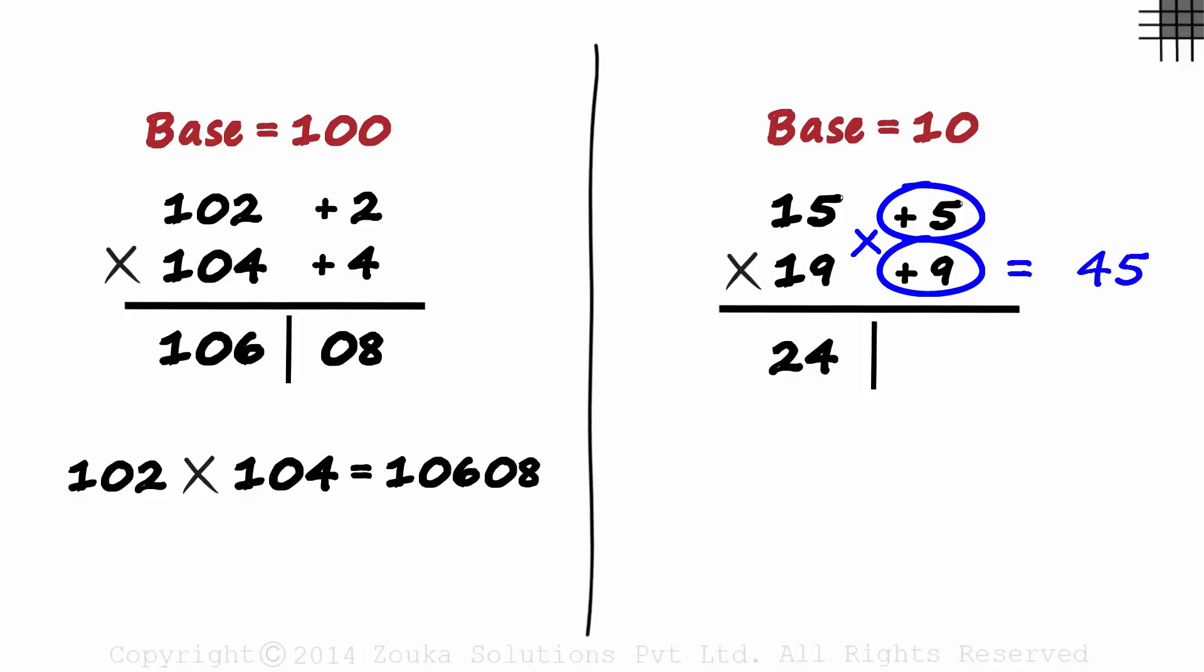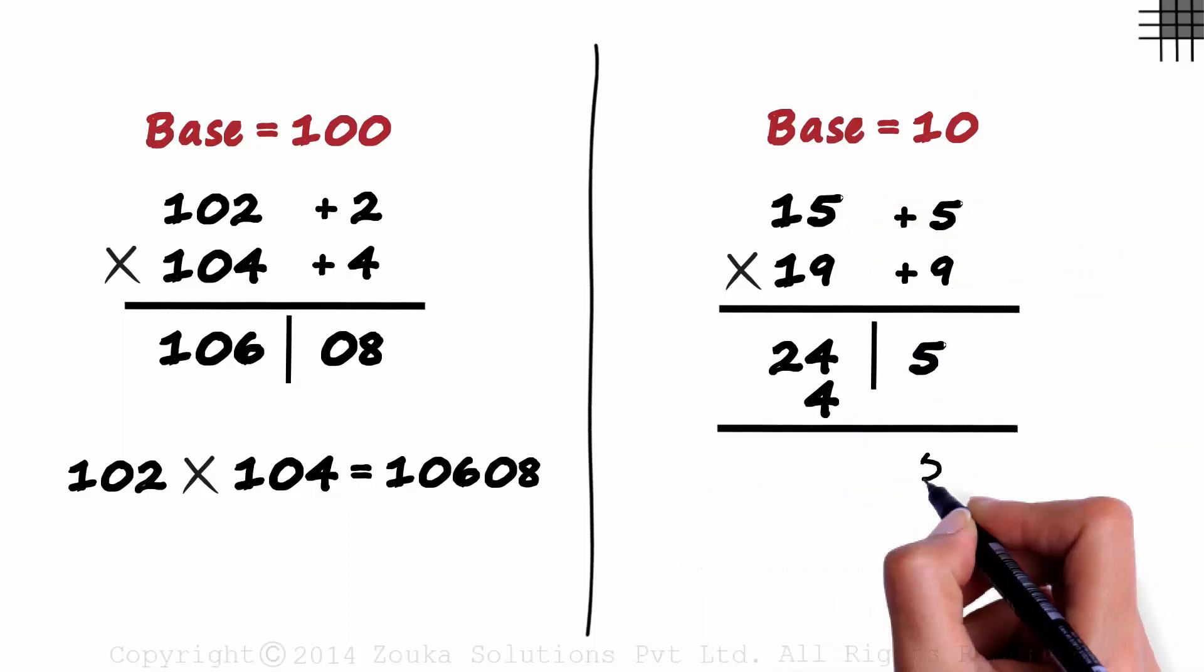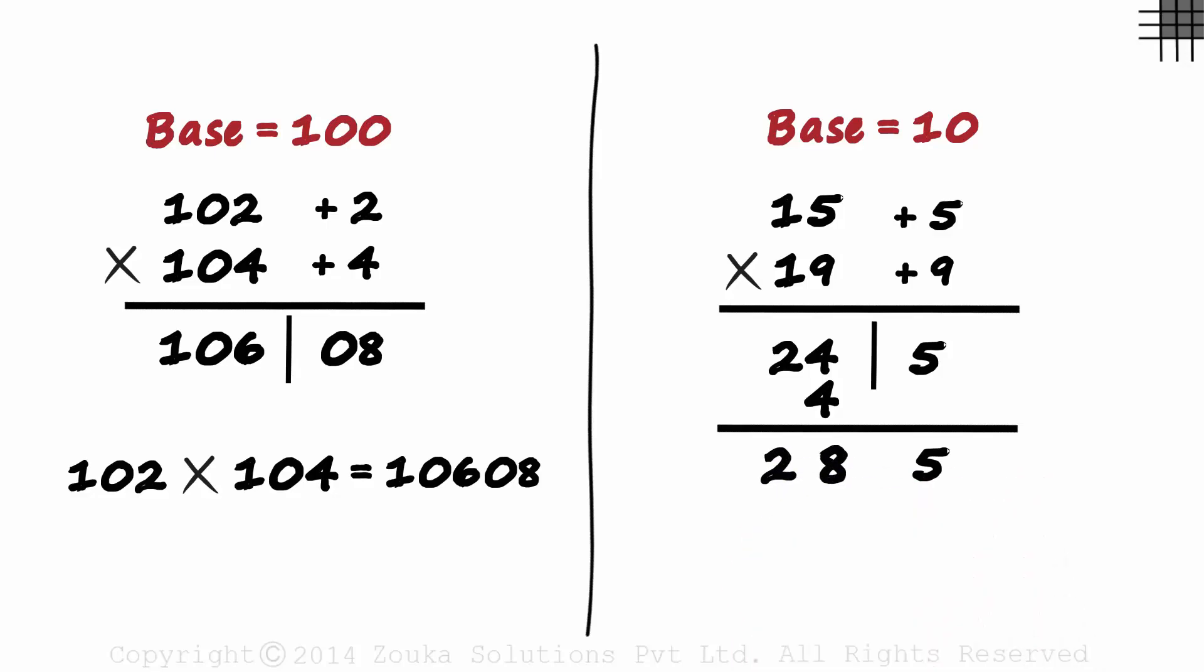But as the number of zeros in the base is 1, we can have just one digit on the right. The 4 of 45 has to be carried over. We write 45 like this and then we add. 5, 8, 2. 15 times 19 is 285.